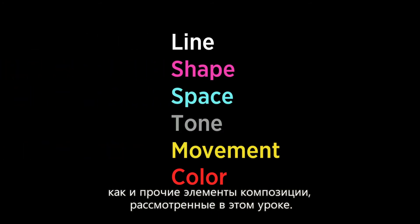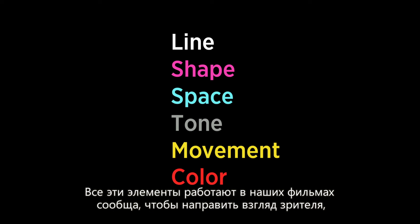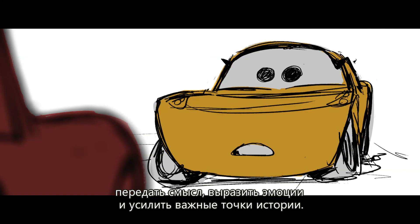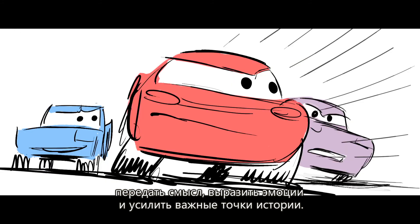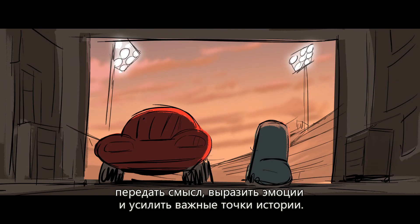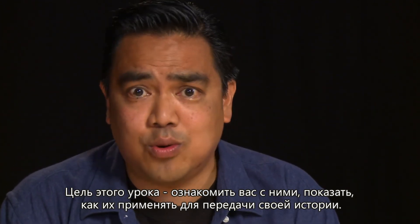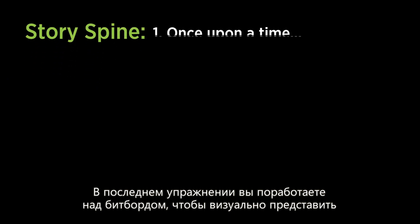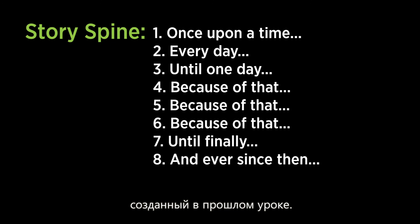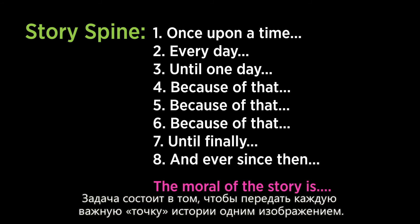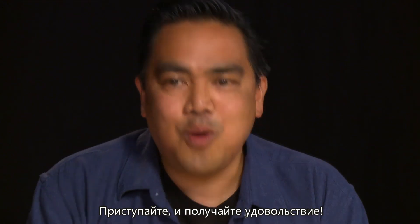As we've seen, color is essential to our storytelling process, and so are the other compositional elements we've explored in this lesson. All of these things work together in our films to direct our audience's eye, convey meaning, express emotions, and support story points. In the final exercise, you'll work on creating a beat board to visualize your story spine from the previous lesson — create a single image for each beat that captures the essential story point of that moment. Go and have some fun!